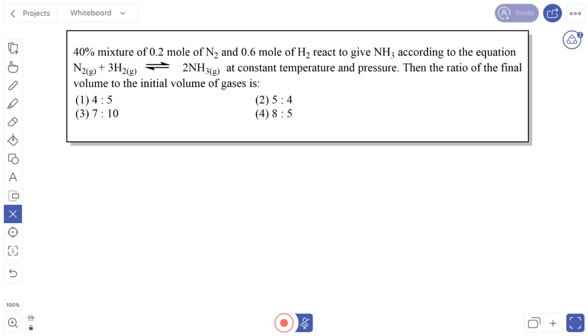Let us take the problem. First we will write the equation: nitrogen gas reacts with hydrogen to give ammonia. Initially at t equals 0, we have 0.2 mol of nitrogen and 0.6 mol of hydrogen, and ammonia is 0.